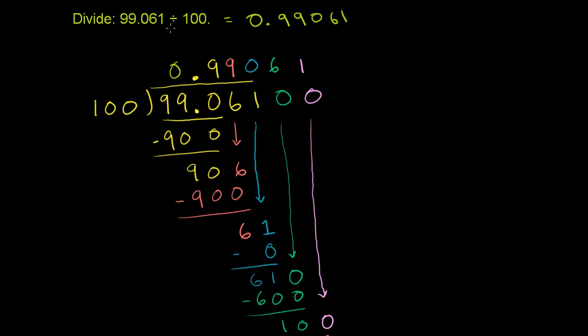And just to make the point, this actually makes sense. 99 is a little bit less than 100. So 99 divided by 100 is going to be a little bit less than 1. And this number is a little bit less than 1.